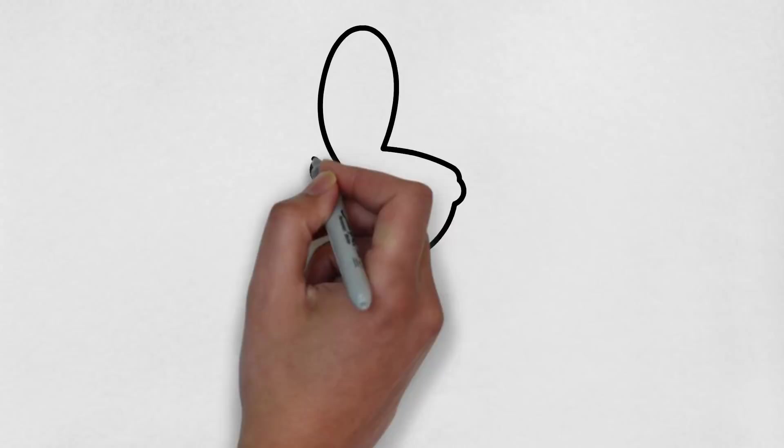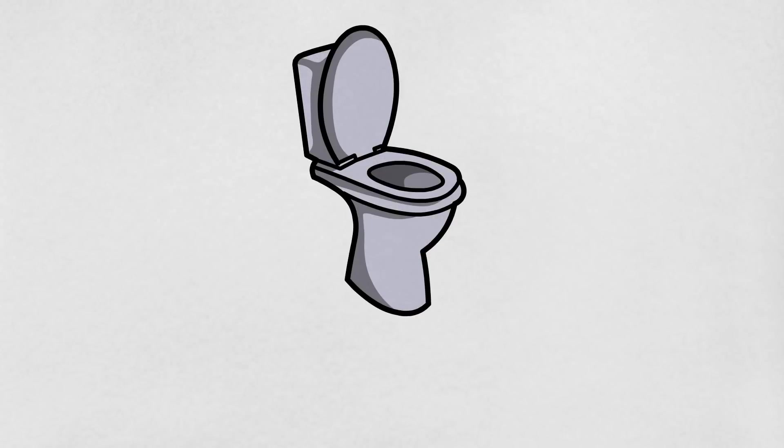On average, an adult flushes about 145 kgs of it down the toilet each year. But where does our waste go?